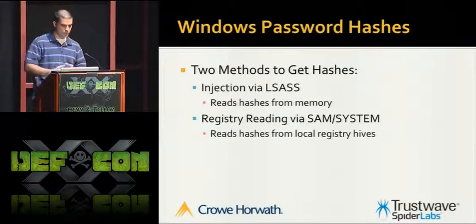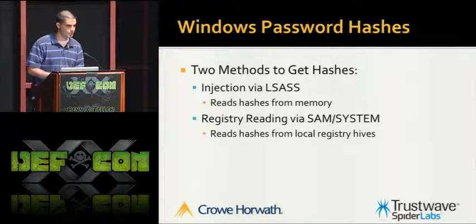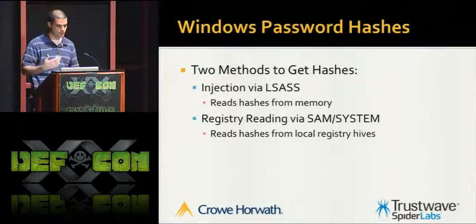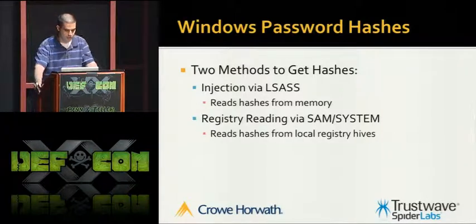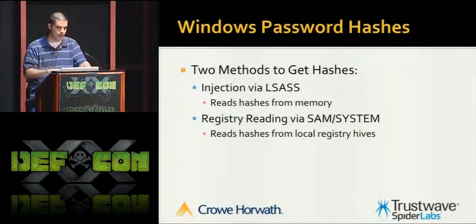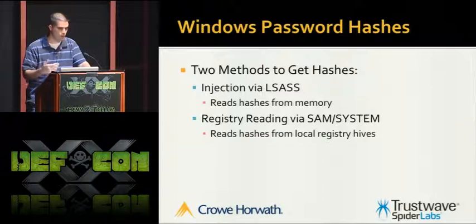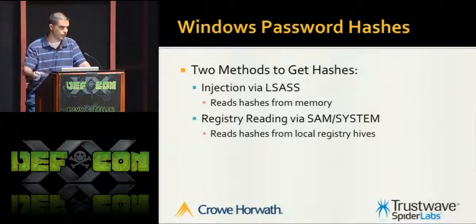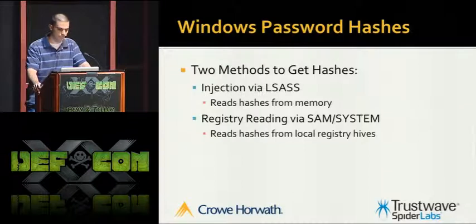The other method is to read the hashes out of the SAM and SYSTEM registry hives. Tools that do this include Metasploit's HashDump script, SAMDump 2, and a few others. This works by going into the SAM hive, parsing out the hash data, feeding it through crypto algorithms, and that creates what we know as LM and NTLM hashes.